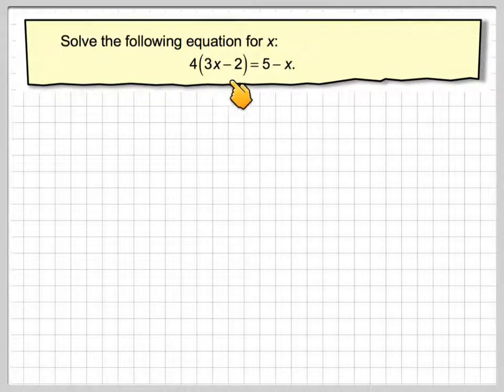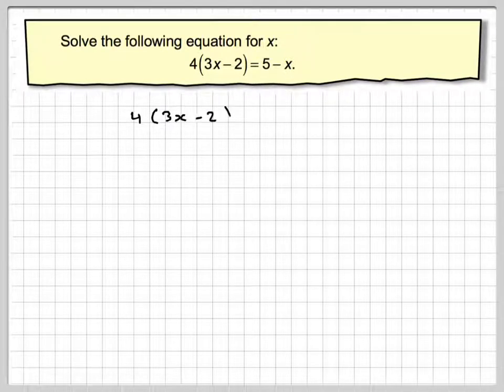We've got 4 brackets, 3x minus 2 is equal to 5 minus x. Let's just write that out to begin with.